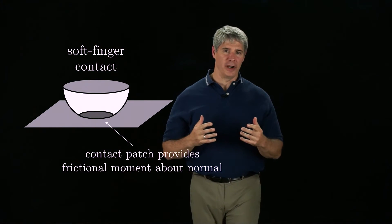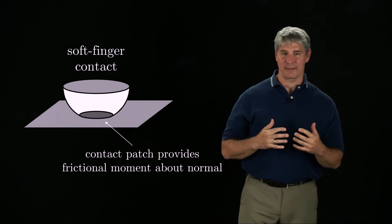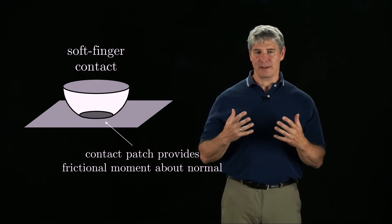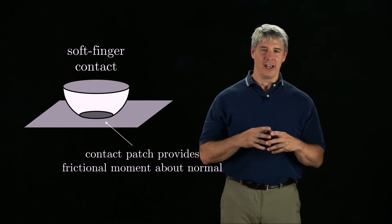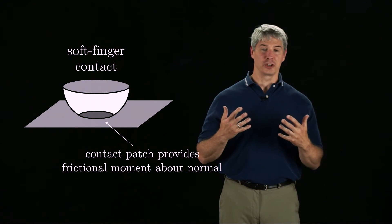If the fingertip is soft, however, it can deform to create a contact patch with the body. The contact patch can provide frictional moments about the normal vector, and two soft fingers can create force closure.